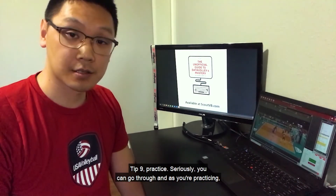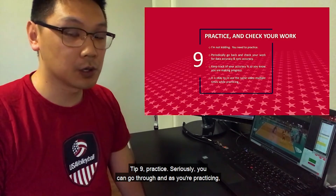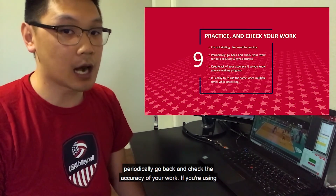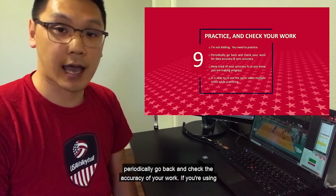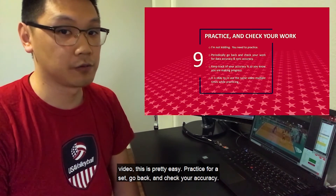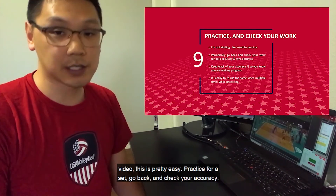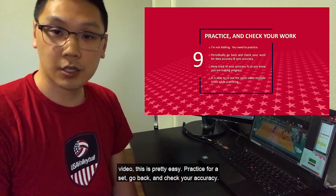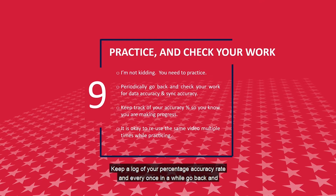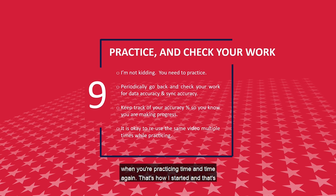Tip 9: practice. Seriously — as you're practicing, periodically go back and check the accuracy of your work. If you're using video, this is pretty easy. Practice for a set, go back and check your accuracy, and keep a log of your percentage accuracy rate. Every once in a while, go back and check how accurate your sync is to the video. It's okay to use the same video when practicing time and time again — that's how I started and that's how I made sure my accuracy level was as high as I possibly wanted.